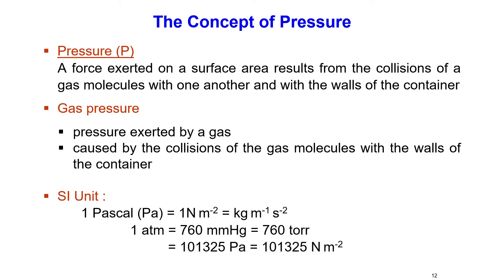Pressure is a force exerted on a surface area, resulting from the collisions of gas molecules with one another and with the walls of the container. The SI unit for pressure is Pascal, where one Pascal equals one Newton per meter squared, or kilogram per meter per second squared. One atm equals 760 mmHg or 760 torr, which equals 101,325 Pascal or 101,325 Newton per meter squared.